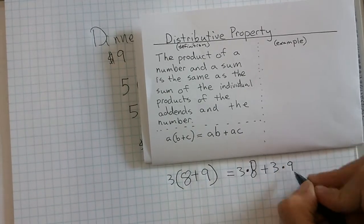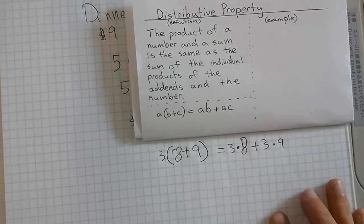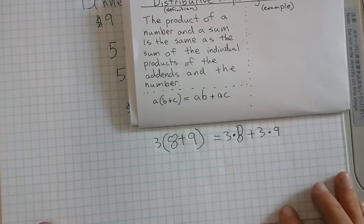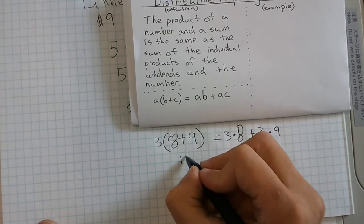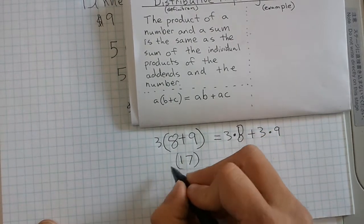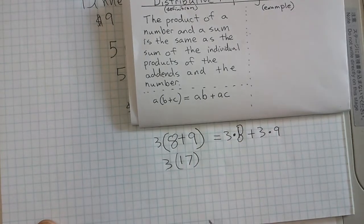Then we would have to use PEMDAS or order of operations to make sure that we actually had written it correctly. So add these together and I would get 17.